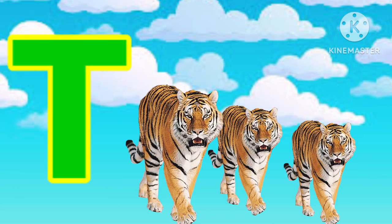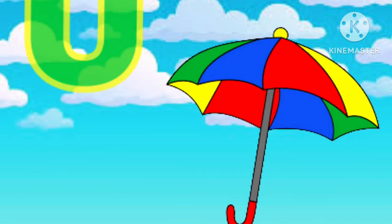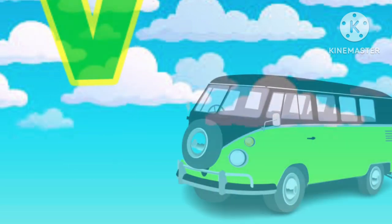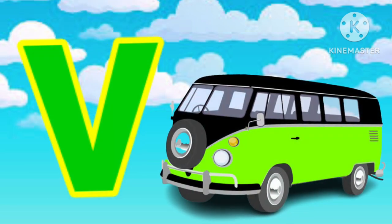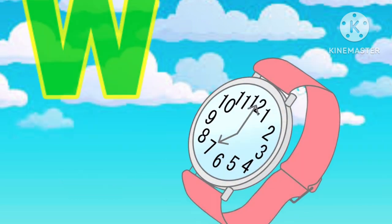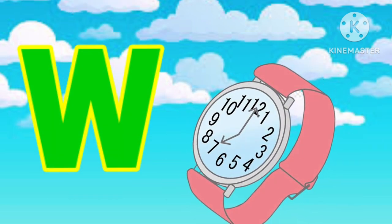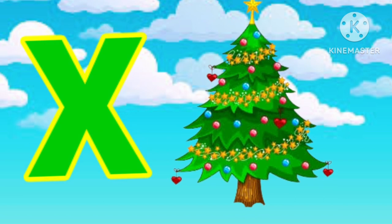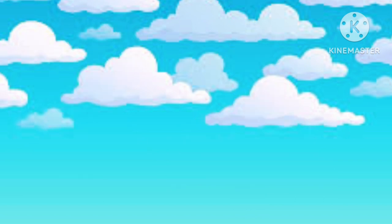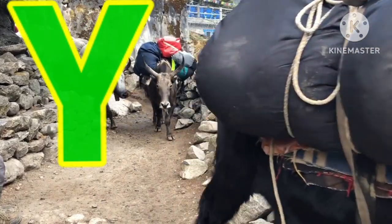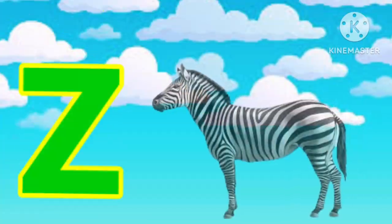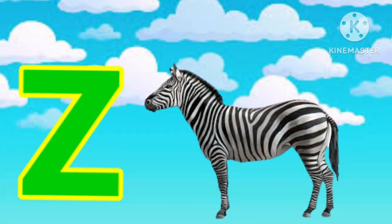T for tiger, U for umbrella, B for lamp, W for watch, X for atmosphere, Y for yard, Z for zebra.